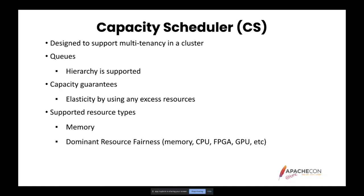Having separate clusters designed to support each organization's needs at peak conditions can lead to low overall average utilization. This was achieved by using queues like in FAIR Scheduler and declaring capacity guarantees to each queue. Resources in a cluster are shared among these queues based on these guarantees, and any queue can access excess resources not being used by others, providing much-needed elasticity.